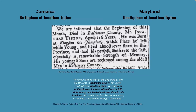Here's an example of an early news article. Many books and websites state that Jonathan Tipton was born in Kingston, Jamaica. That evidence came from the January 1757 entry in the Maryland Gazette, which Charles D. Tipton included in his book, Tipton: The First Five American Generations. The article states: 'We are informed that at the beginning of this month, died in Baltimore County, Mr. Jonathan Tipton, aged 118 years. He was born at Kingston on Jamaica, which place he left while young, and lived almost ever since in this province, and had his perfect senses to the last, especially a remarkable sense of memory.'